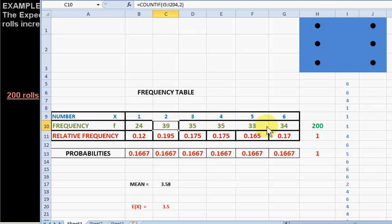Of course, these frequencies must sum to 200. The relative frequency of the number 1 is 0.12. We get that by dividing 24 by 200.